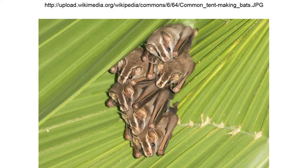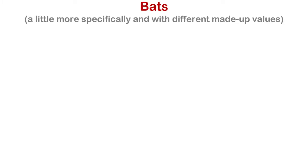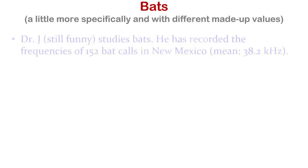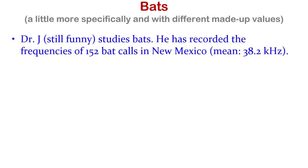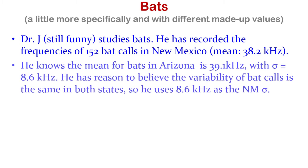Back to the bat example with Dr. Jay. He records a sample of 152 bat calls in New Mexico and gets a mean of 38.2 kilohertz. The mean of bats in Arizona is 39.1 kilohertz with a standard deviation of 8.6. He has reason to believe the variability of bat calls is the same in both states.